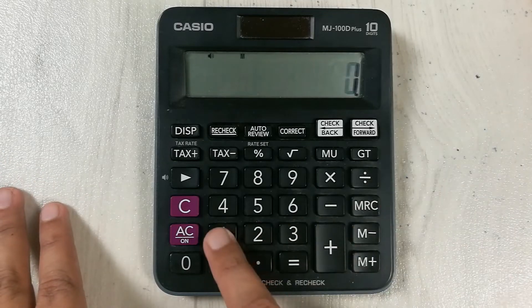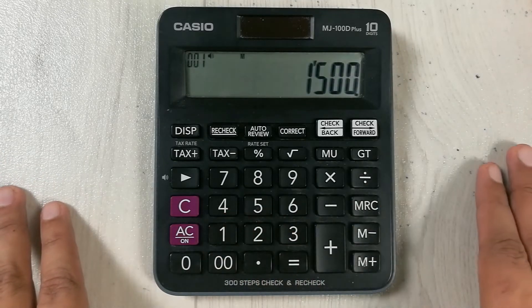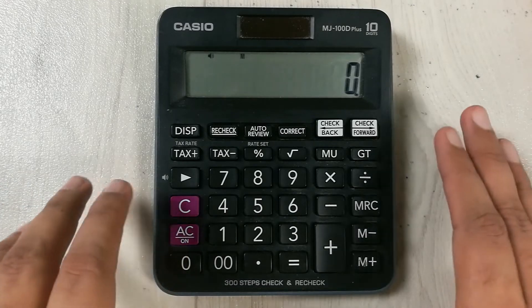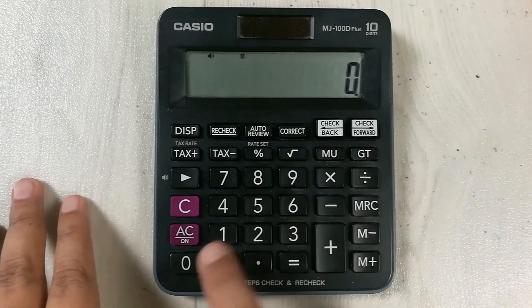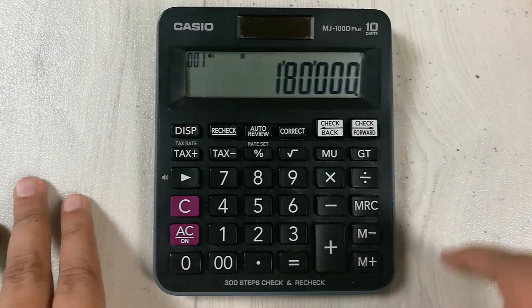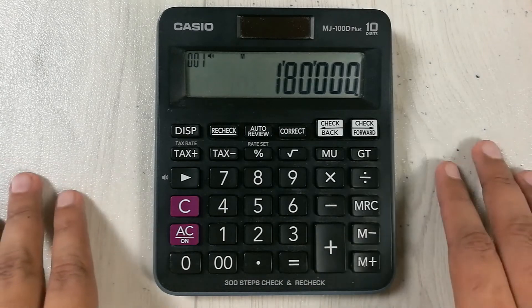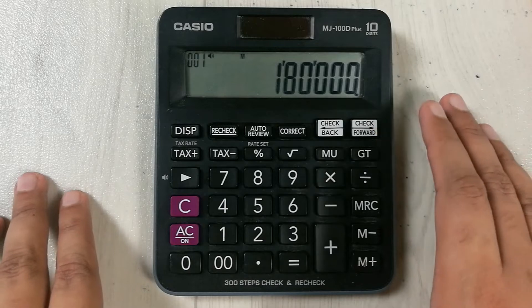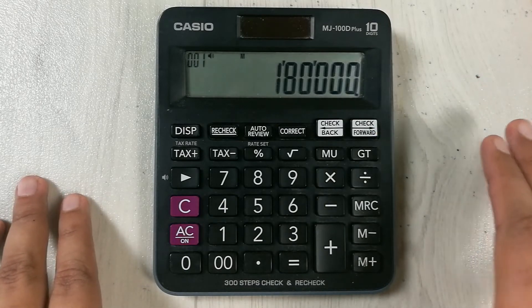The total price of that apartment is $180,000. Now what we will do is divide this price by the area in square feet.